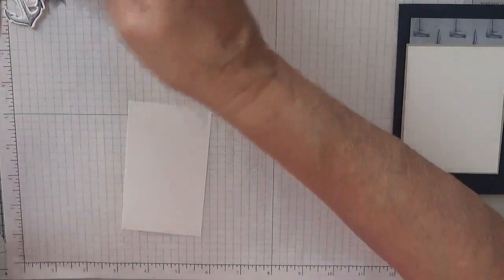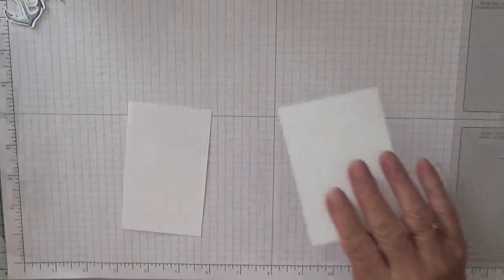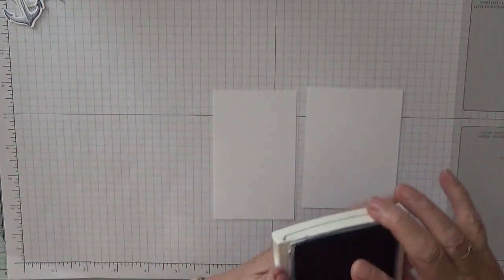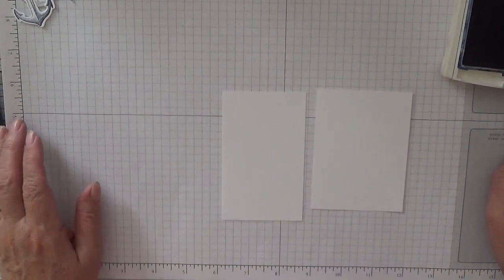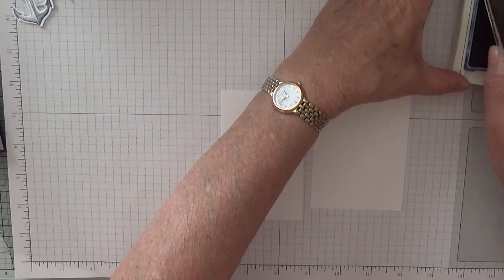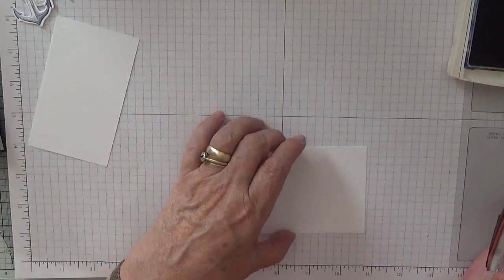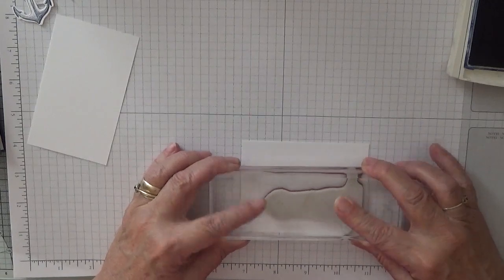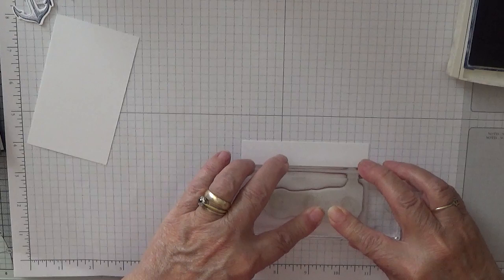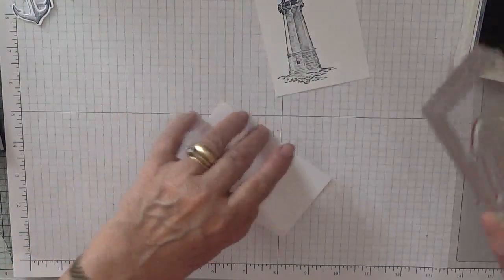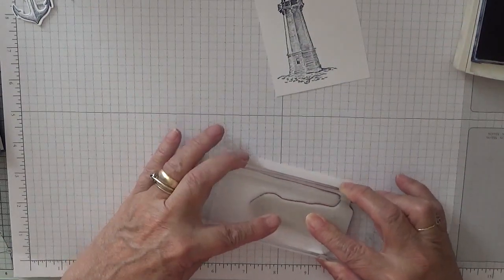So to start with, we need this and we need this. We need some Night of Navy ink, and you also need a mask for the lighthouse which I've already got. So start off, we're going to stamp the lighthouse twice. We're going to stamp the lighthouse on our main card first. I'm going to stamp it to the left of the card. And then we want one on here just so we can cut it out.